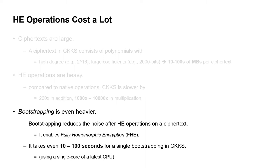Moreover, the bootstrapping operation is the heaviest one in HE. The bootstrapping, which is a concept introduced by Gentry in 2009, is an operation consisting of other HE operations. After each HE operation on a ciphertext, noise accumulates in the ciphertext, and this limits the number of operations on it. By applying bootstrapping before the noise explodes, we can apply any number of HE operations, and this is called fully homomorphic encryption. However, the cost is extremely high, and it takes even dozens of seconds in a recent single-threaded environment.